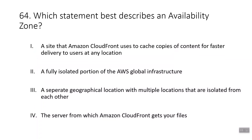Question sixty-four: which statement best describes an availability zone? The correct answer is a fully isolated portion of the AWS global infrastructure. Availability zones are distinct locations within an AWS region engineered to be isolated from failures — a single data center or group of data centers within a region. The first option describes an edge location, the third describes a region, and the fourth describes an origin.